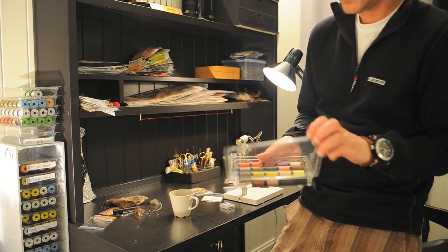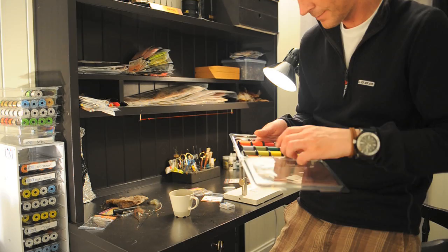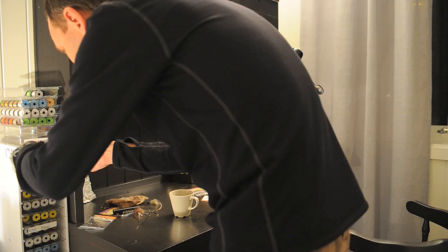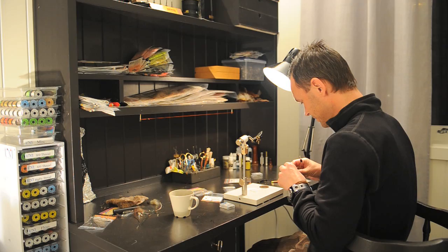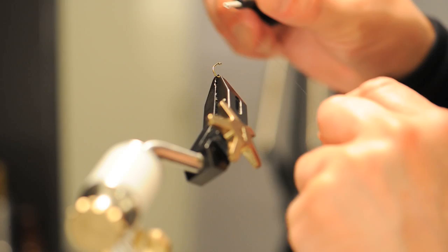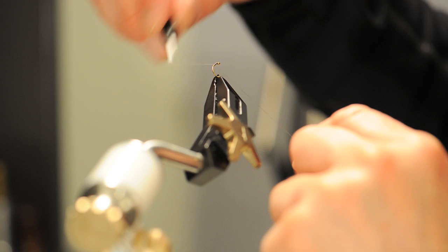Now we are going to tie a BBO imitation, the Brun's BBO. First we are going to wrap a base layer with the tying thread. A tip here, keep the bobbin close to the hook shank for good speed and control.